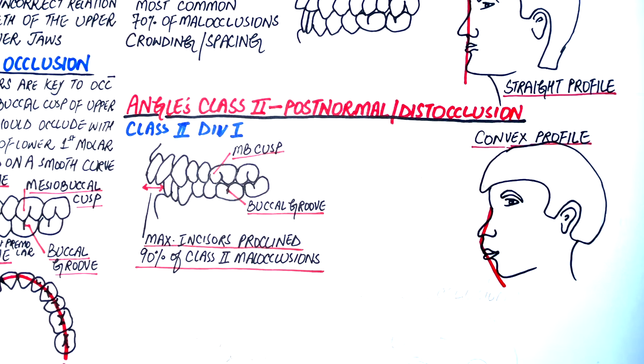In an Angle Class 2 Division 1 malocclusion, if the overjet is over 6 mm, it is counted as great, and anything above 9 is considered extreme. The maxillary canine cusp tip will also lie anterior, that is, in between the mandibular canine and lateral incisor.